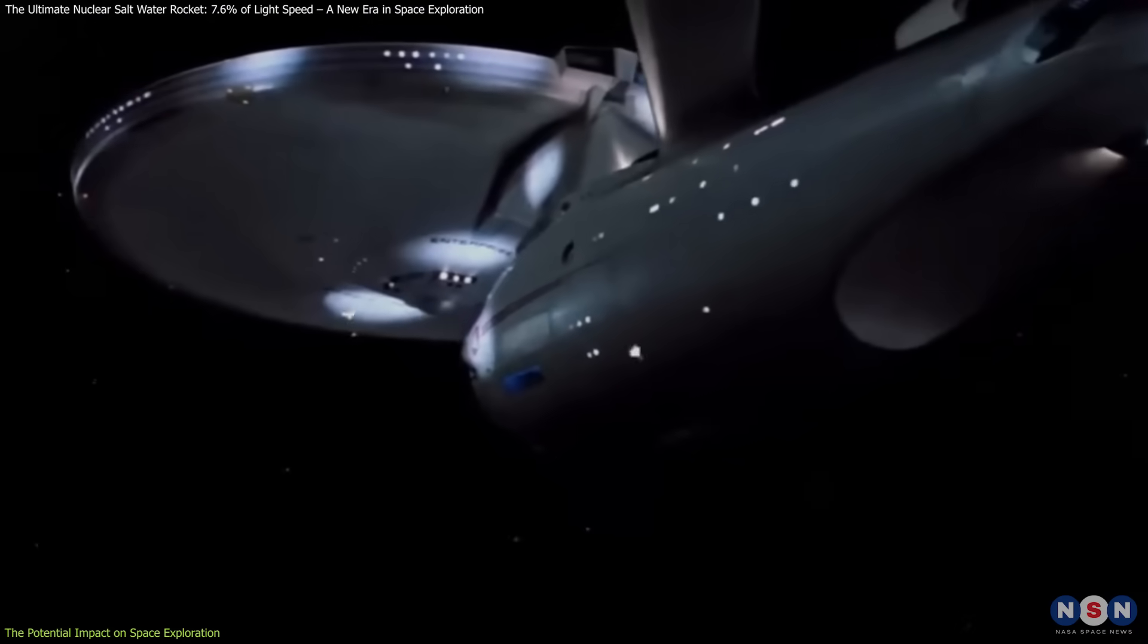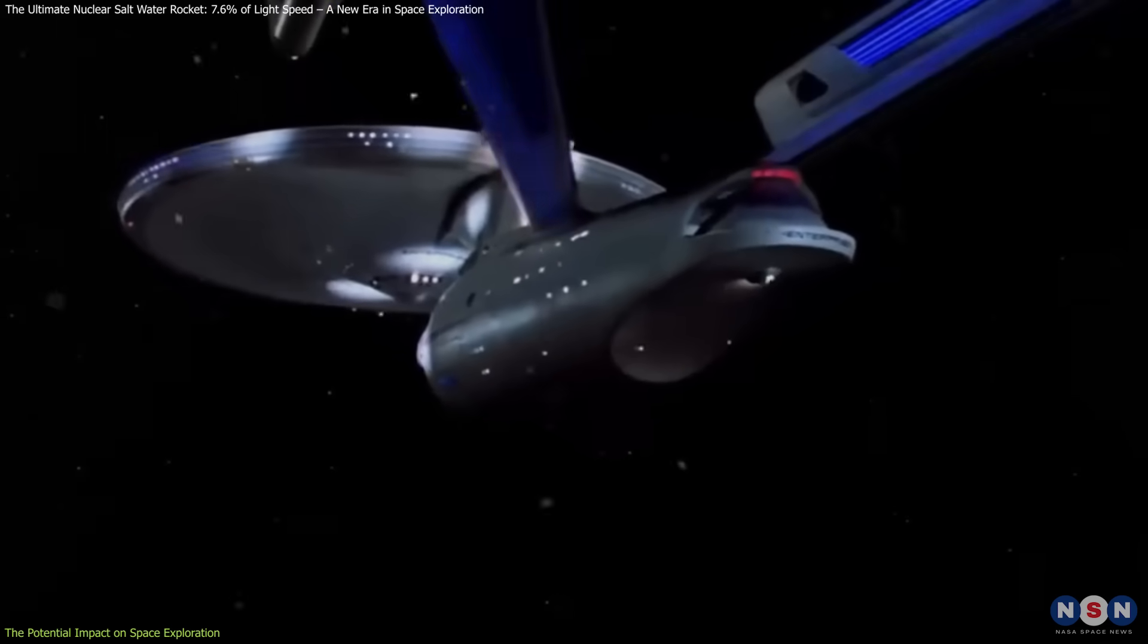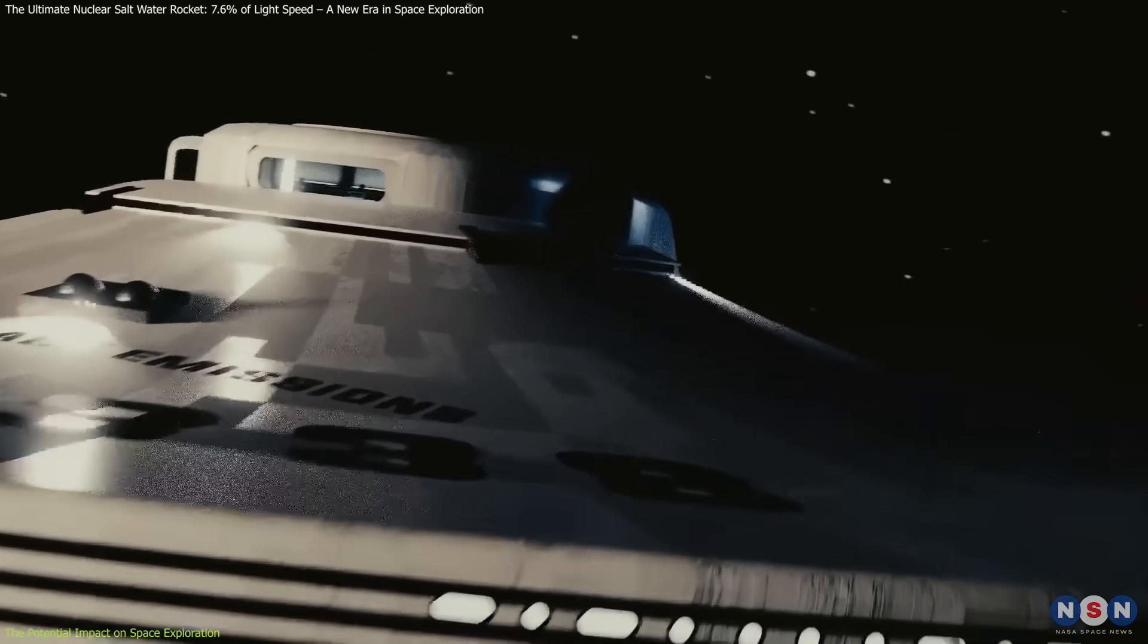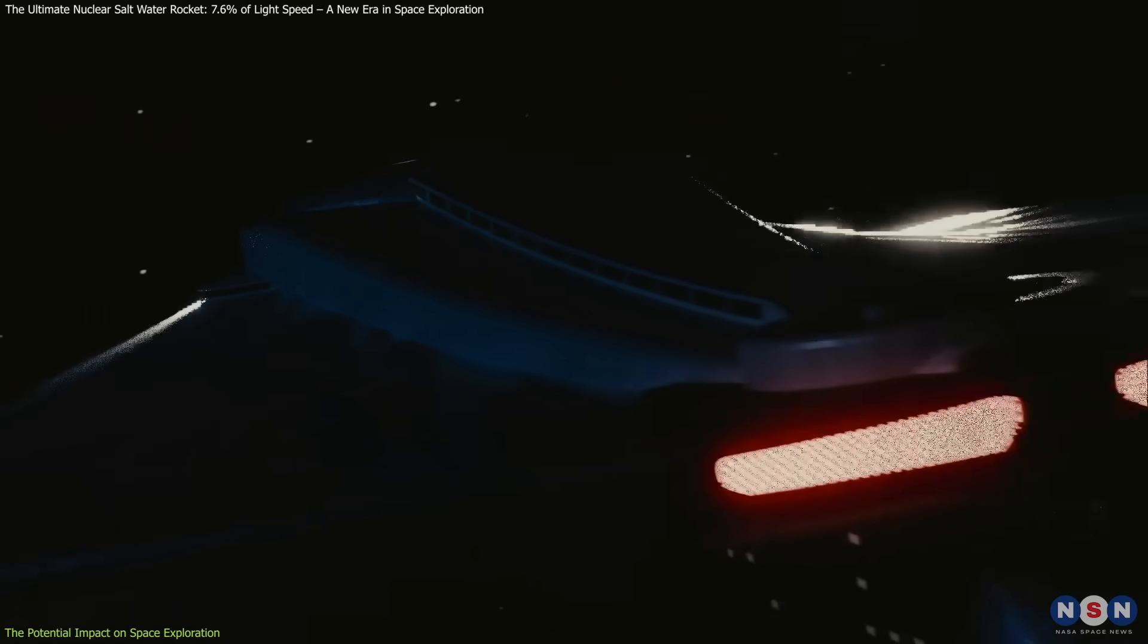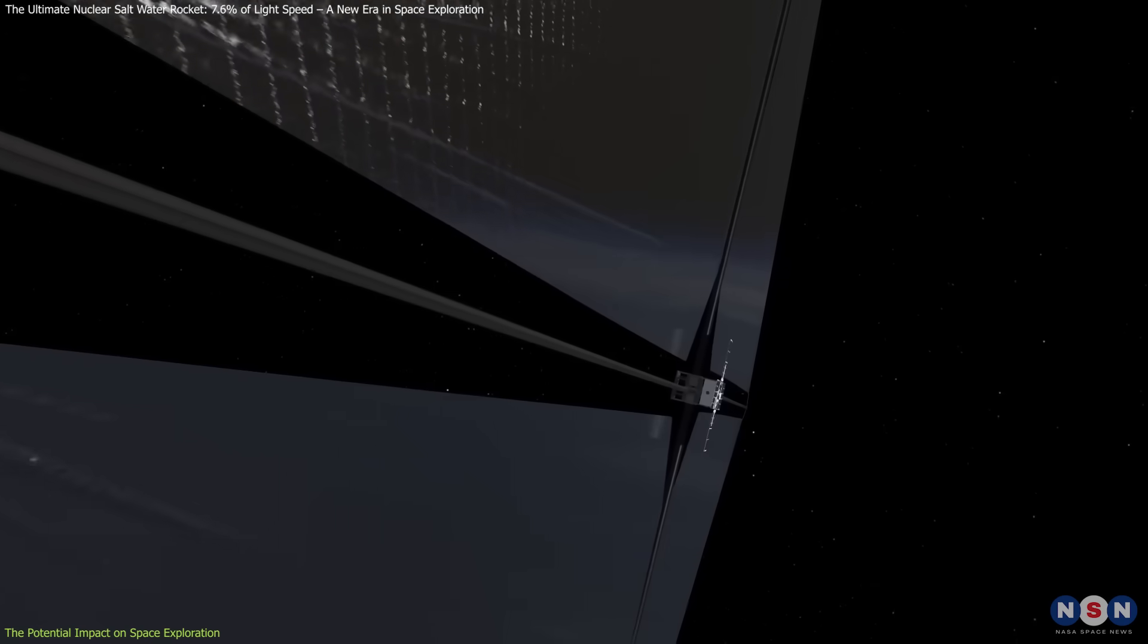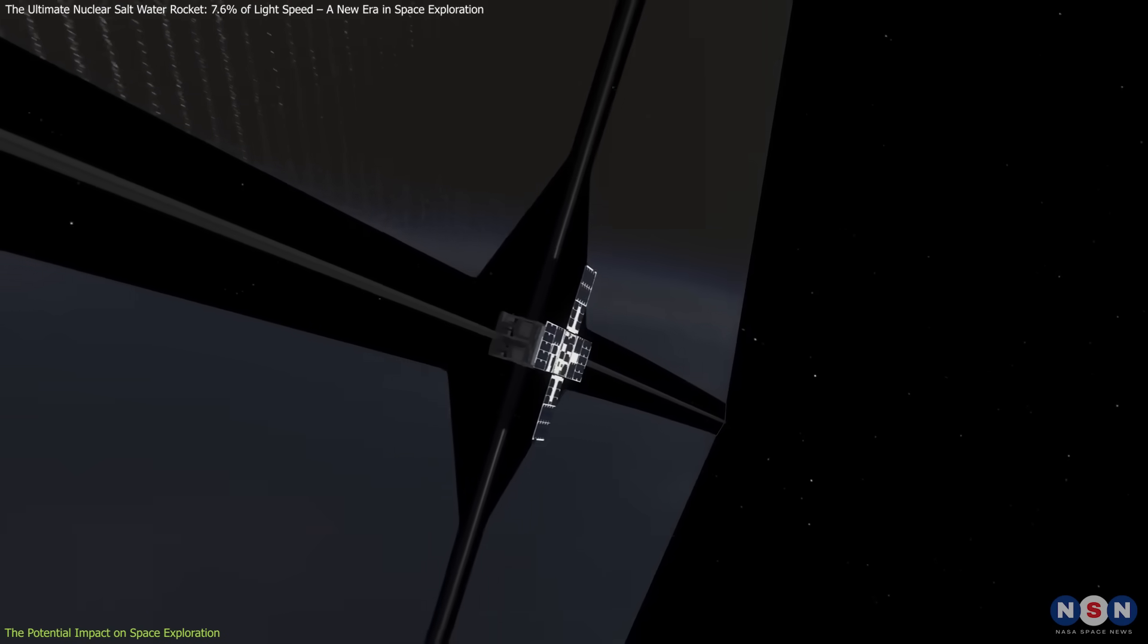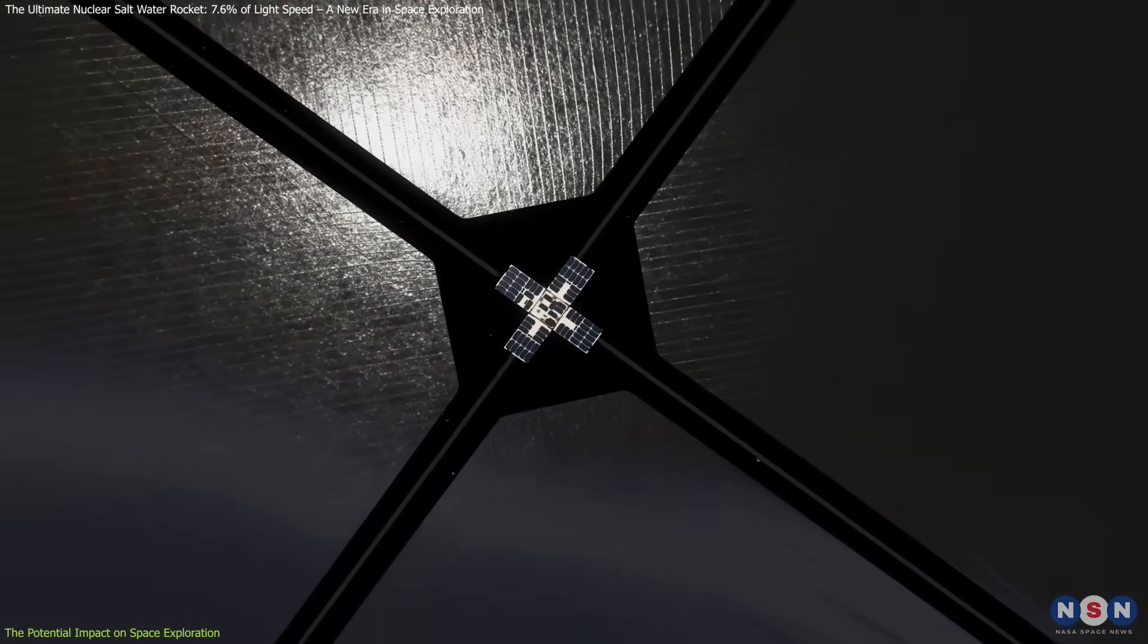For example, a spacecraft could use this rocket for rapid initial acceleration, reaching high speeds quickly. Then, a secondary fusion-based or nuclear electric propulsion system could take over, providing long-duration thrust while conserving fuel. Magnetic sails, mag sails, could then be deployed for deceleration, allowing the spacecraft to gradually slow down without consuming additional fuel.